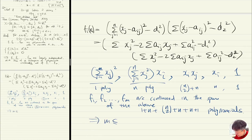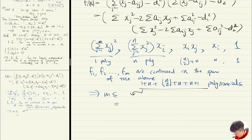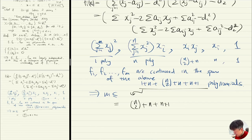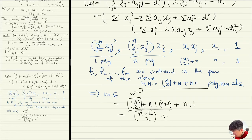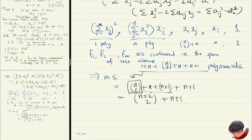So that means m is less than or equal to 1 + n + C(n,2) + n + n + 1. This sum equals C(n+2,2) + n + 1. That's the proof that every two-distance set in R^n has at most C(n+2,2) + n + 1 points — you cannot have more than that.